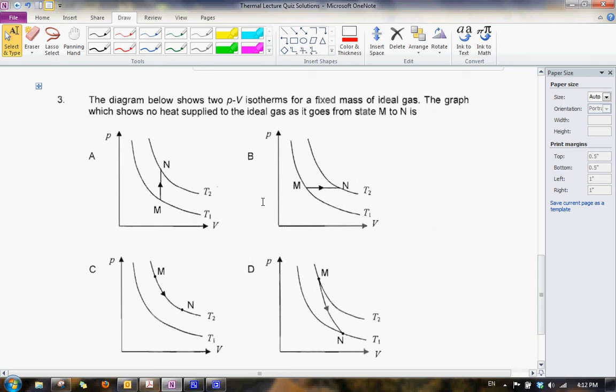Let us now look at question 3. Let us read the question together. The diagram below shows two PV isotherms for a fixed mass of ideal gas.